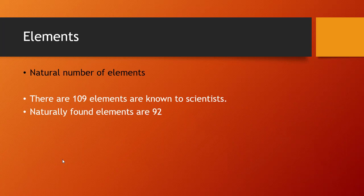The next one: natural number of elements. There are 109 elements known to scientists. Naturally found elements are 92. Around 92 elements are naturally found; other elements are made by scientists through artificial methods.